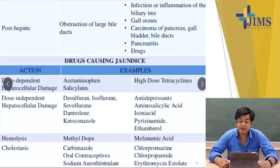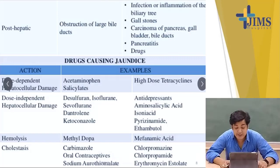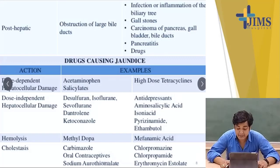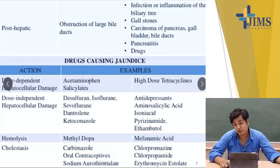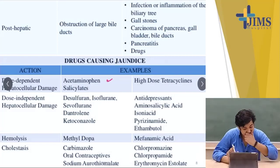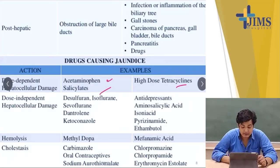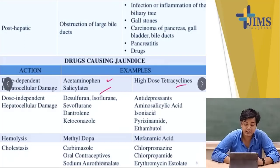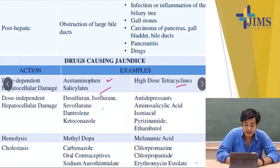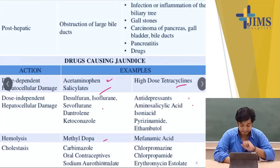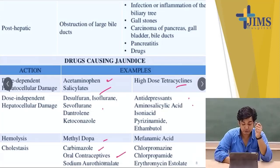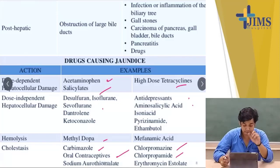Post-hepatic jaundice results from obstruction of large bile ducts — causes include infection or inflammation of the bile tree, gallstones, carcinoma of the pancreas, gallbladder or bile ducts, pancreatitis, or drug-induced causes. Drug-induced jaundice examples: dose-dependent hepatocellular damage from acetaminophen and salicylates; dose-independent hepatocellular damage from disulfiram, isoflurane, sevoflurane, antidepressants and aminosalicylic acids; hemolysis from methyldopa; and cholestasis from carbimazole, oral contraceptives, chlorpromazine or chlorpropamide.